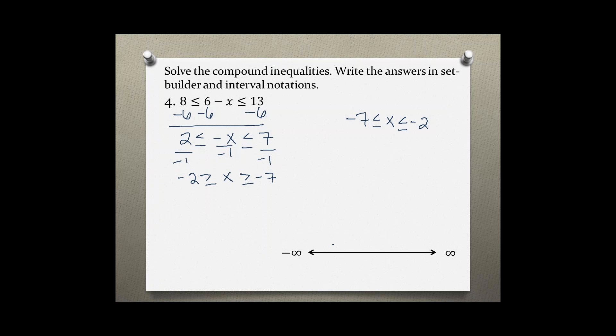So to graph this solution, we'll plot negative 7 and negative 2. x is between negative 7 and negative 2, so we'll use brackets because we're including those two values and shade in between those.